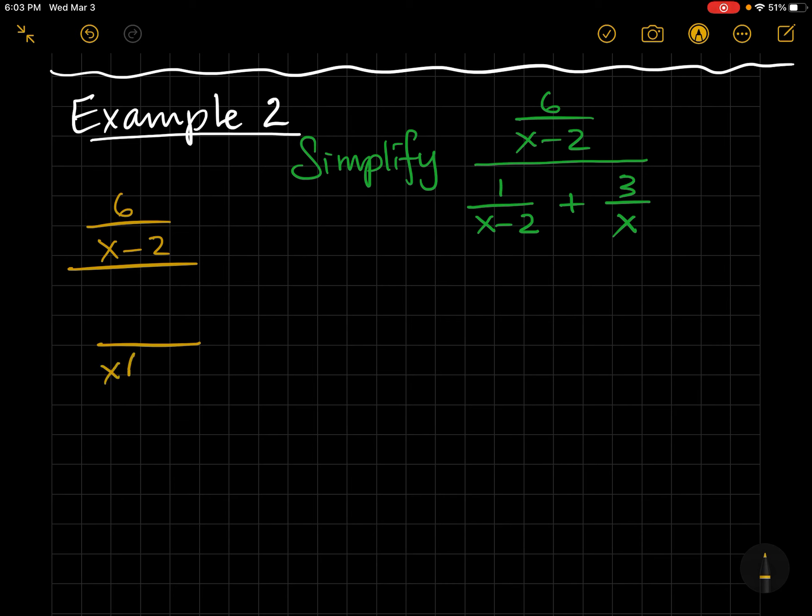Now, for that denominator, I'm going to make my common denominator x times x minus 2. So now, I need an x minus 2 for this fraction. And I need an x top and bottom for this fraction.